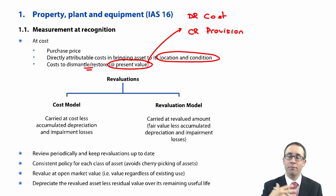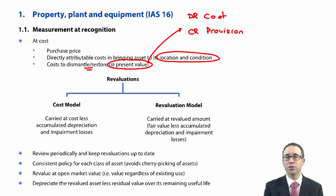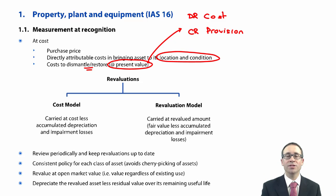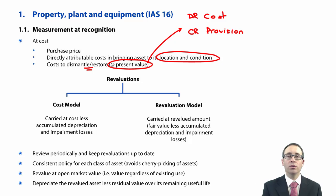You initially record the dismantling provision at present value, add it onto the cost, and then depreciate the cost as normal. The provision must then be unwound up to its terminal value over the life of the asset, and any subsequent adjustment goes to your finance cost. You apply the discount rate to the outstanding liability of the provision, and that movement goes to your finance costs.